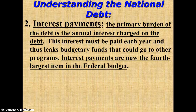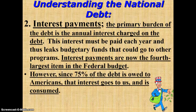Understanding the national debt: interest payments. The primary burden of the debt is the annual interest charged on the debt. This interest must be paid each year and thus leaks budgetary funds that could go to other programs. Interest payments are now the fourth largest item in the federal budget. However, 75% of the debt is owed to Americans — that interest goes to us and is consumed.